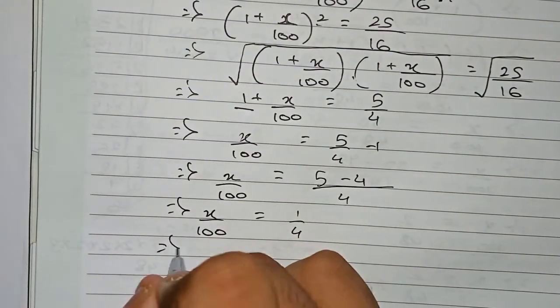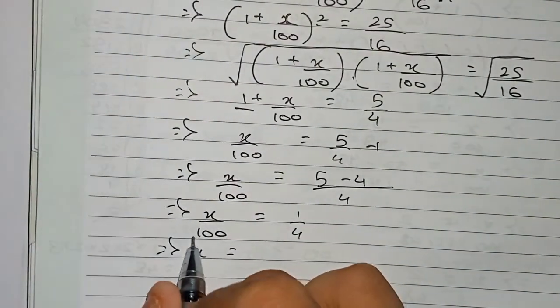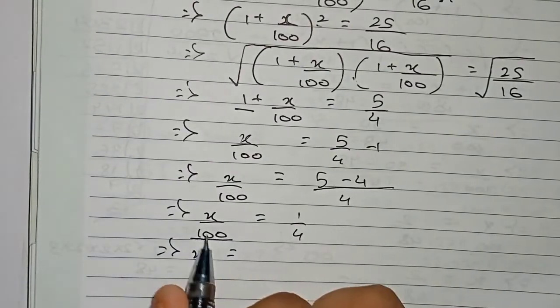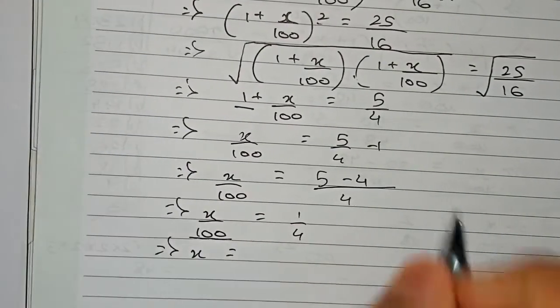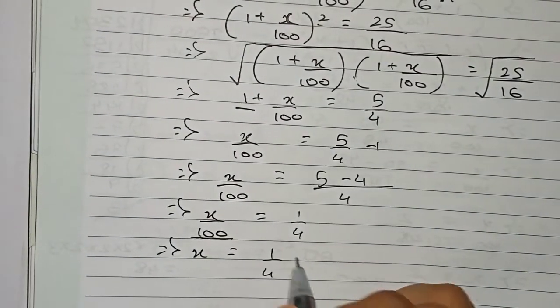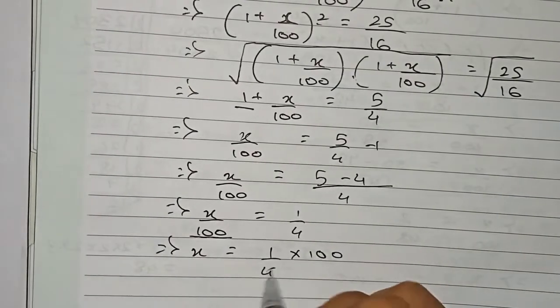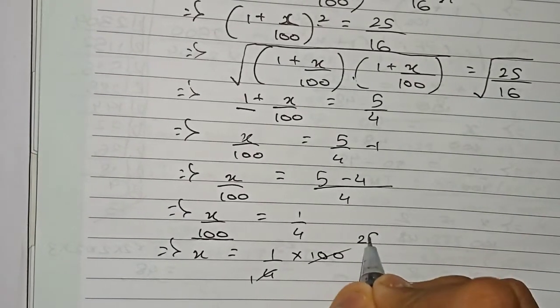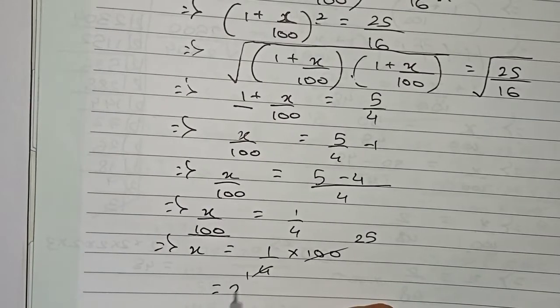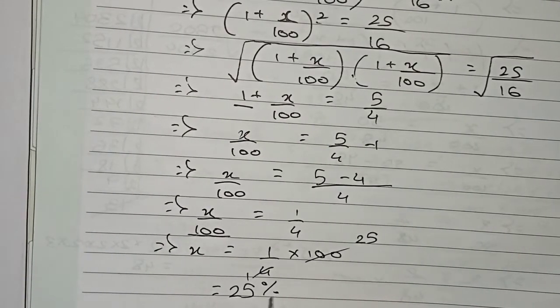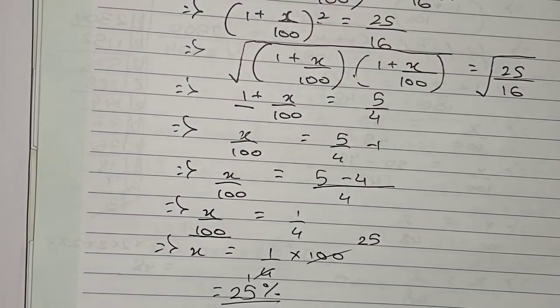So now finally x will be equal to, now 100 we are taking to this side, so therefore as it is in division here it will go for multiplication: 1 by 4 multiply 100. So we cut it, it will become 25. Therefore it becomes 25 percent.